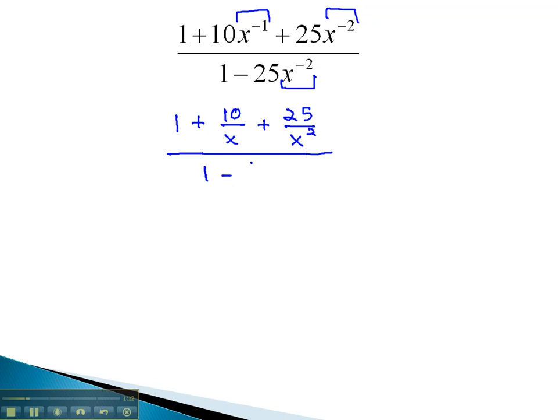In the denominator, we have 1 minus 25 over x squared. We can now simplify this expression by identifying the least common denominator using the highest exponent. We will multiply each term by x squared. This includes the numbers that are not fractions. When we reduce 1x with the x squared, we're left with a single x. The x squareds will divide out completely, and we end up with x squared plus 10x plus 25 over x squared minus 25.